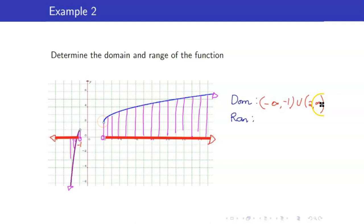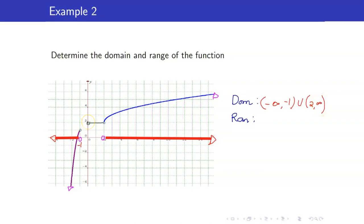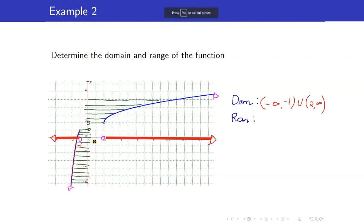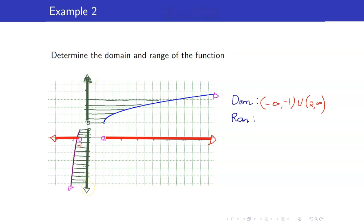Next, let us get the range. Starting from this point, I will get the y-coordinate, but this one is hollow because this point is hollow. This one will continue. This point over here is also going to be hollow. Getting all the y-coordinates, the points in the y-axis we were able to cover — the graph will extend in both pieces. Therefore, the range is from negative infinity up to 1, with 1 not included, union 2 up to infinity, with 2 not included.